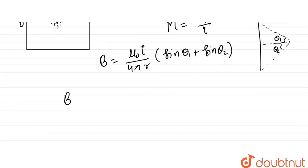So B due to single wire: B1 due to only one side is mu naught I over 4 pi, perpendicular distance is B by 2, and sin 45 plus sin 45 is 1 by root 2 plus 1 by root 2.